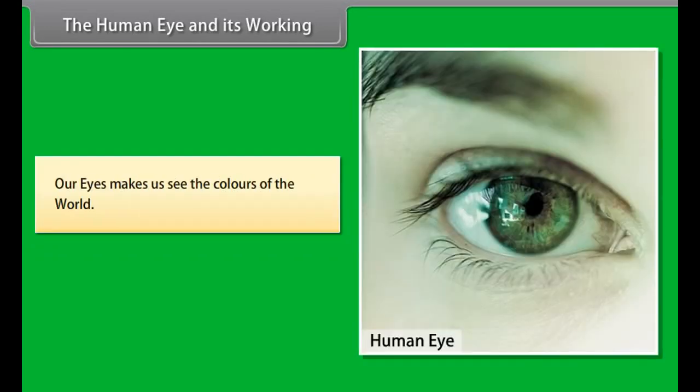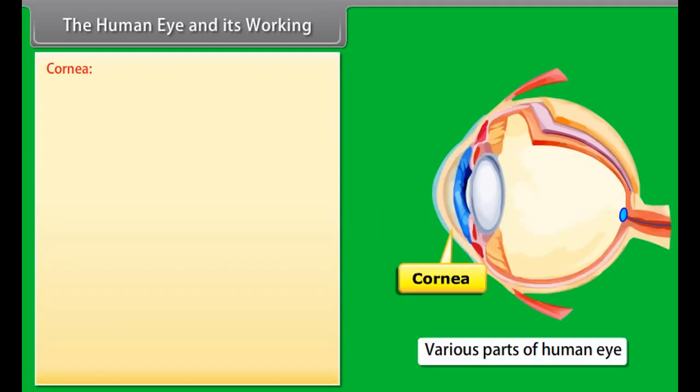Human eye has a crystalline lens and it works like a camera. Various parts of eyes along with their functions are: Cornea - It is the transparent bulge on the front surface of eyeball. Light enters the eyes through cornea.